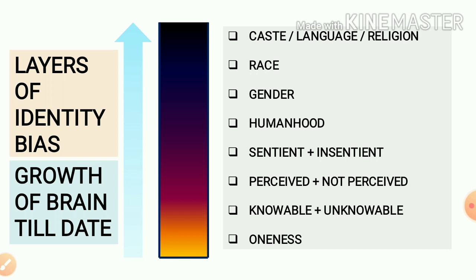Next, it perceives everything around it, maybe by eating or by something, and there is something which it cannot perceive. So the entire universe is divided into perceived and not perceived for the child. And as the child grows up, everything gets classified into two categories.